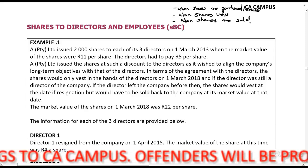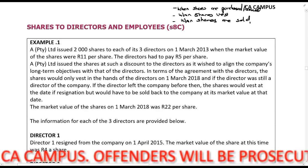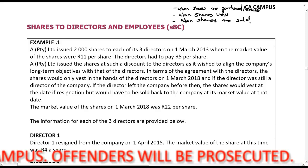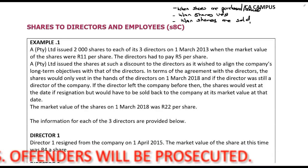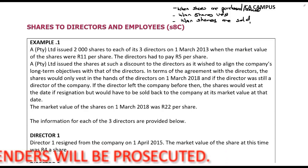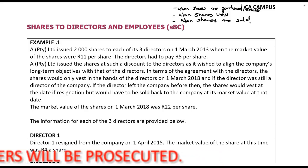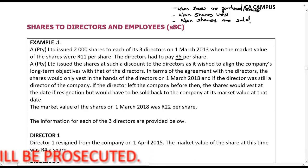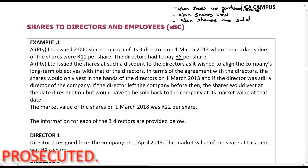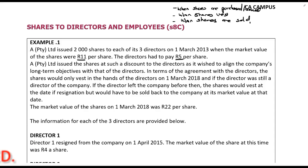AP2I Limited issued 2,000 shares to each of its three directors on the 1st of March 2013, when the market value of the shares was R11 per share and the directors had to pay R5 per share. The shares were issued at a discount to align the company's long-term objectives with those of the directors. In terms of the agreement, the shares would only vest in the hands of the directors on the 1st of March 2018.